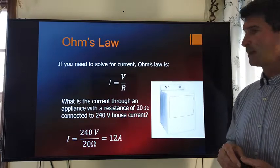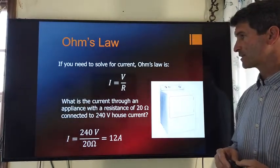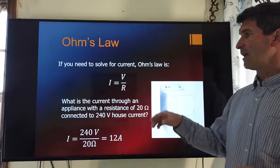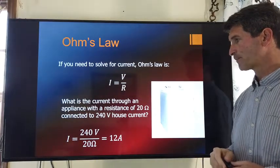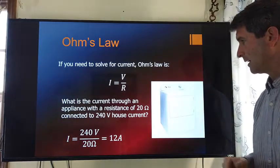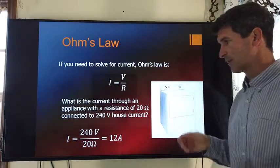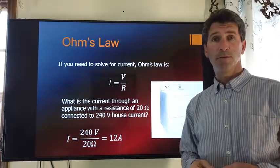Again, now we're going to solve for current as a function of voltage and resistance. V equals IR. I can divide both sides by R. That gives me I equals V over R. We have a dryer here. It's an electric dryer. It's plugged into a 240 volt outlet.